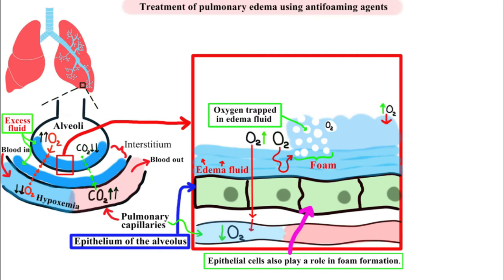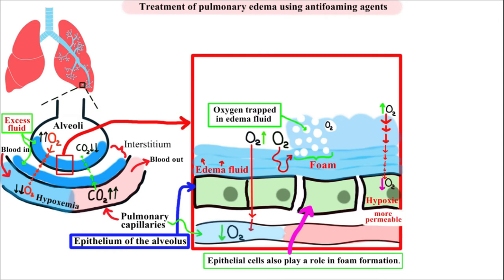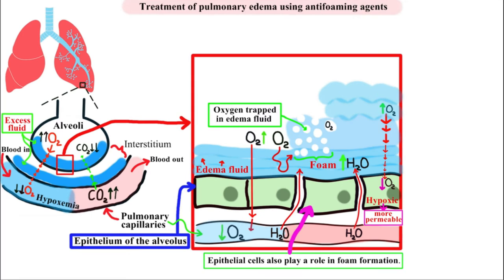The presence of edema fluid in the alveoli of the lung hinders the diffusion of oxygen upon which the cells of the respiratory epithelium normally depend for their own oxygenation. This sets up a vicious circle because the hypoxic epithelium becomes more permeable and so permits further passage of fluid. Because of that, the quantity of edema fluid and foam respectively will increase. We can break this vicious circle by using anti-foaming agents.